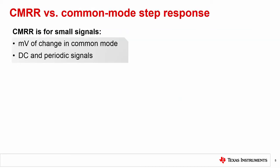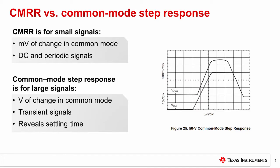Another important detail to understand with the CMRR specification is that it applies to small, periodic common mode signals on the order of millivolts. For large, transient common mode signals, with a common mode swing of a volt or greater, the common mode step response figure in the datasheet should be used.